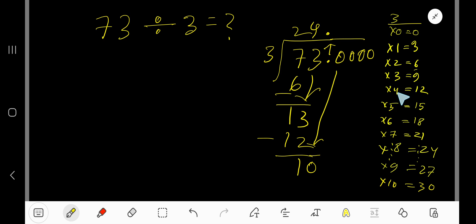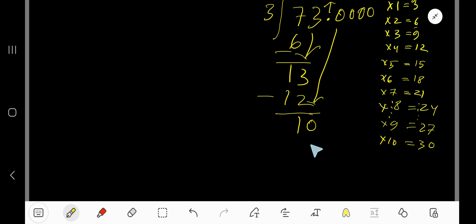4 times 12 which is greater, so 3 times. 3 times 3 is 9. Subtract to get 1, bring down another zero.